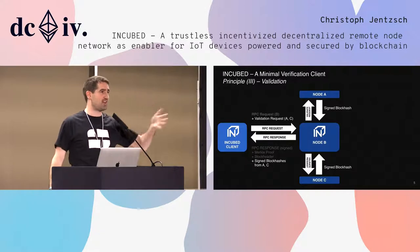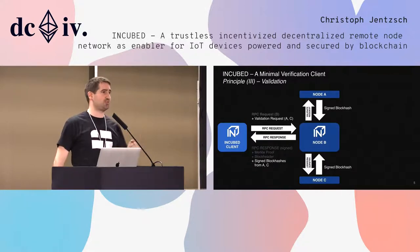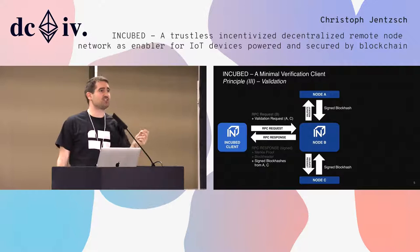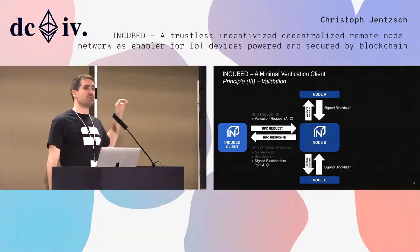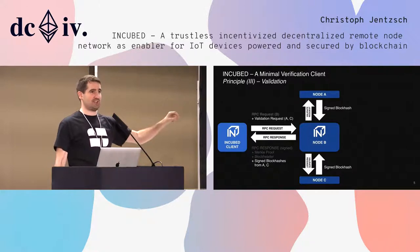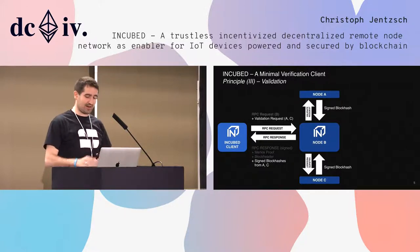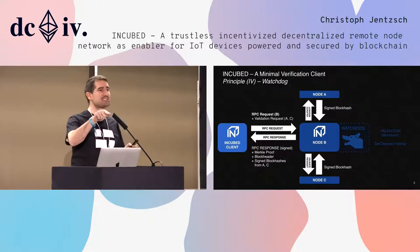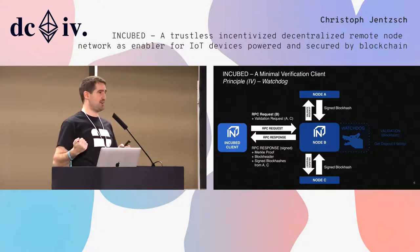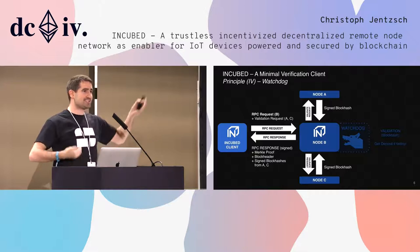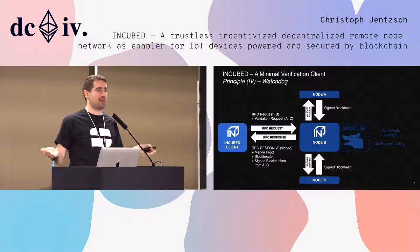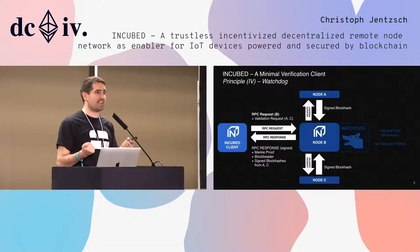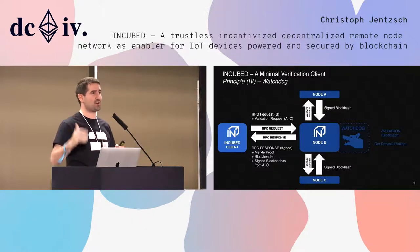In the EVM there is one opcode that gives you information about the past: the block hash opcode. You can retrieve the last 256 block hashes. So if node A or C lies, node B figures it out, sees it's the wrong block hash, and can go directly to the smart contract, convict them, and get their deposit. Node B acts like a watchdog. So nodes A and C have no incentive to lie, because if they did, they would just lose their deposit. This way the Incubed client doesn't need to be part of the peer-to-peer network, but still has safety, and can measure how much security it has by how much deposit is behind it.